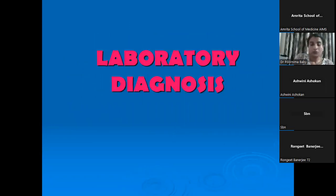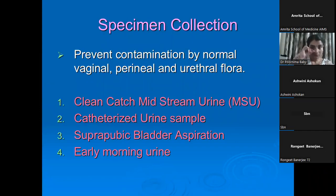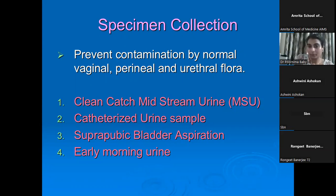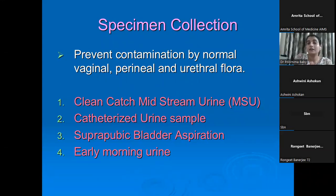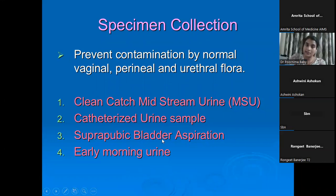Now let's look at the laboratory diagnosis, starting with sample collection. Unless you send a proper sample, there is no point expecting a good result. There are four ways in which samples can be collected: a clean catch midstream urine (MSU) sample, a catheterized urine sample, a suprapubic aspirate in the case of children, and an early morning urine sample.